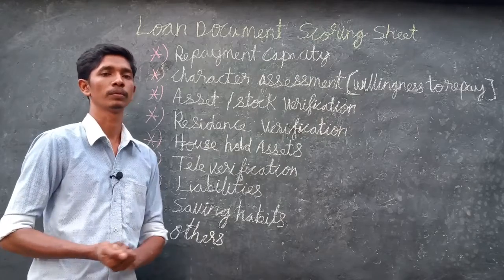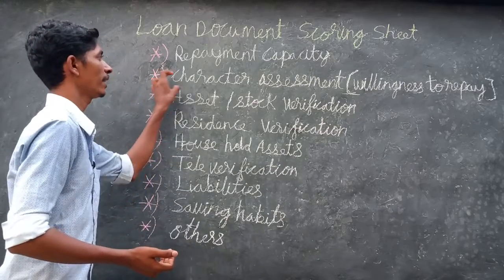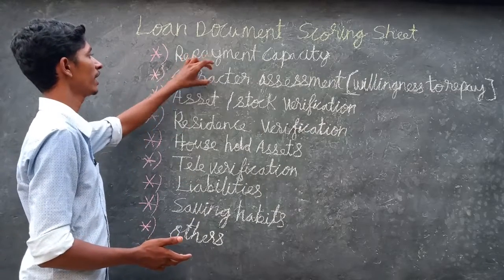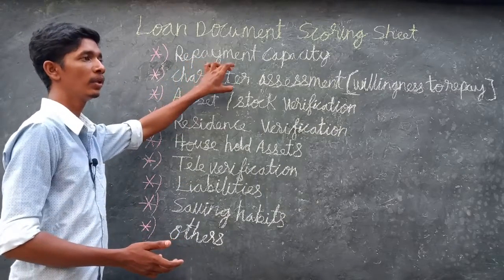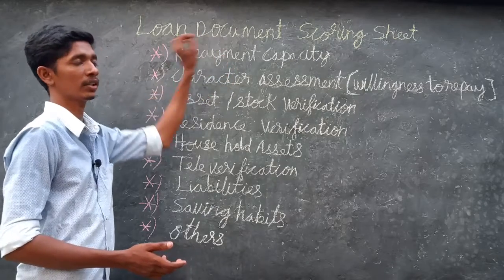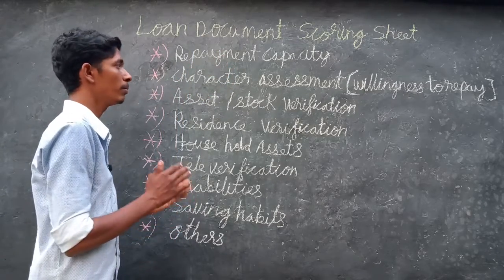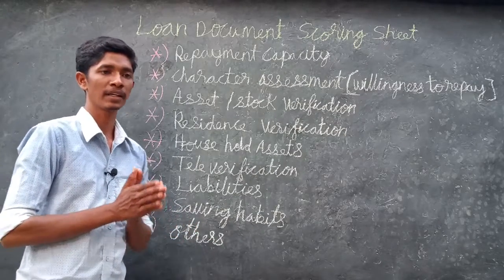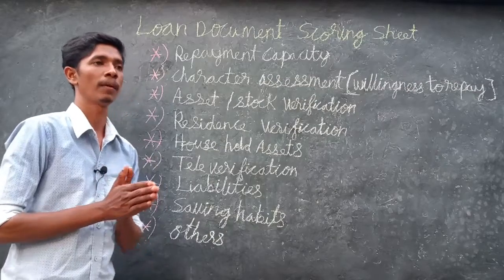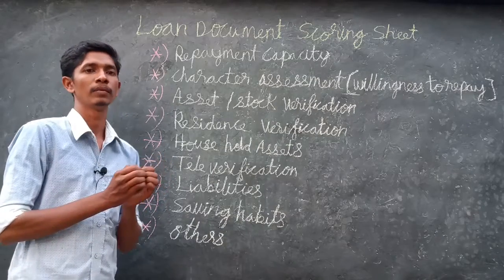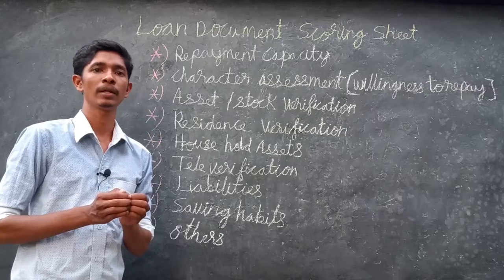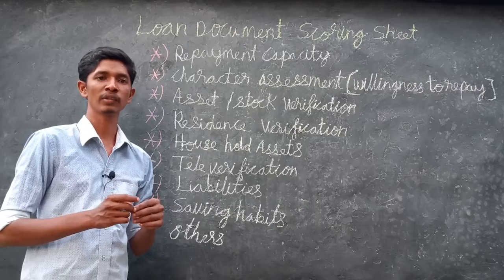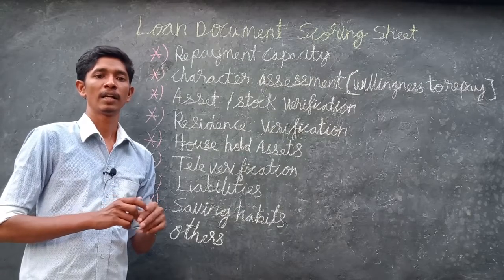Repayment capacity also includes credit score, character assessment, and willingness to repay. The character of the customer is helpful for determining repayment capacity. Character is a must — the branch manager will identify it through a personal discussion to assess whether the customer is willing to repay or not.